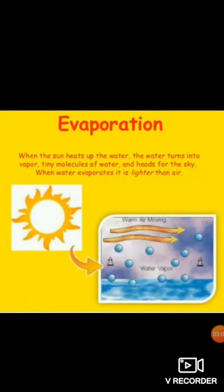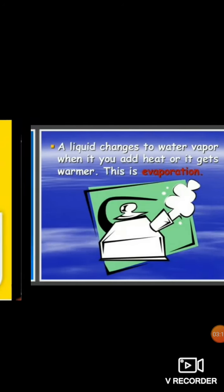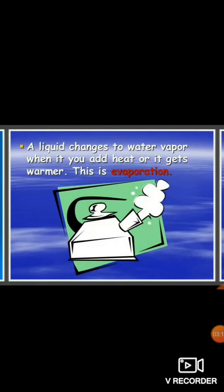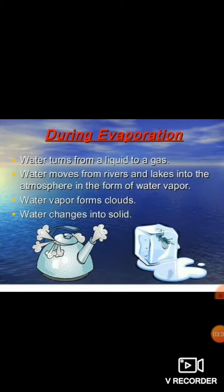When the sun heats up the water, the water turns into vapor — tiny molecules of water — and rises toward the sky. When water evaporates, it is lighter than air. A liquid changes into water vapor when heat is added or it gets warmer through the effect of sun rays. During evaporation, liquid turns into gaseous form — water vapor.